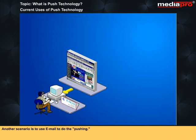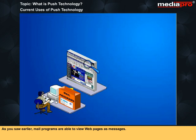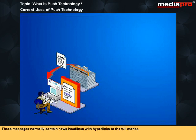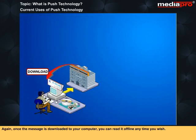Another scenario is to use email to do the pushing. As you saw earlier, mail programs are able to view web pages as messages. Content providers are now sending email messages formatted in HTML. These messages normally contain news headlines with hyperlinks to the full stories. Once the message is downloaded to your computer, you can read it offline anytime you wish.